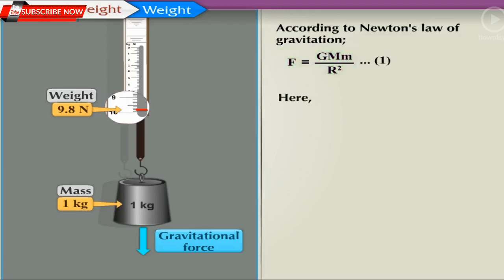Here, capital G into capital M upon capital R square is equal to acceleration due to gravity small g. Substituting this value in equation 1, we get F is equal to small m into small g.